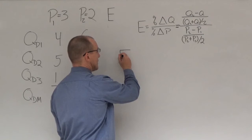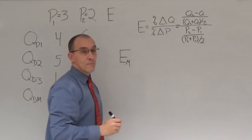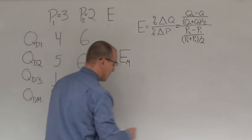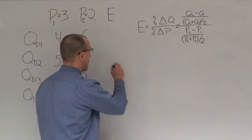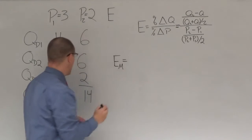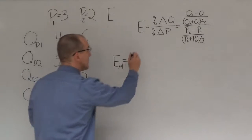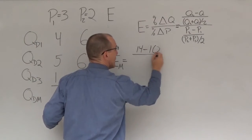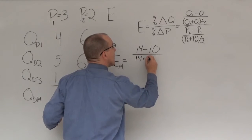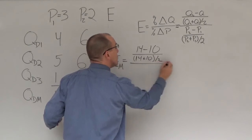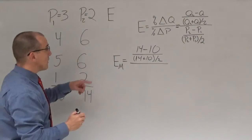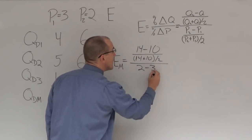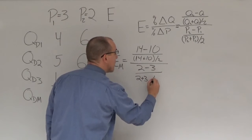Let's start with the market demand curve — the elasticity for the market. We have our market demand at the two prices. Elasticity of the market: Q2 is 14 minus Q1 which is 10, divided by (14 plus 10) divided by 2, all over price 2 which is 2 minus price 1 which is 3, over (2 plus 3) divided by 2.